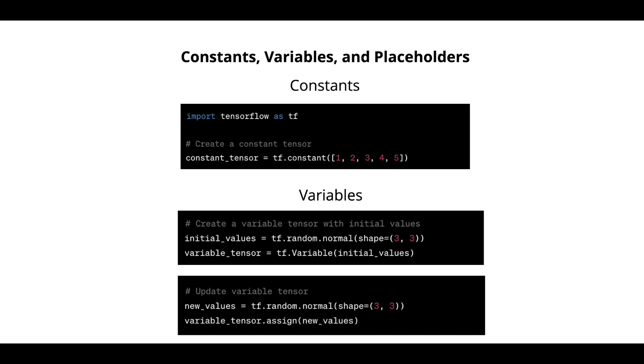Now updating these variables, you can say new values equal to tf.random.normal shape equal to 3,3 and then variable.tensor.assign the new values.